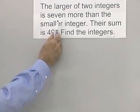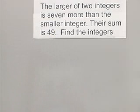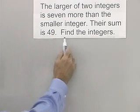We have the larger of two integers is 7 more than the smaller integer. Their sum is 49. Find the integers.